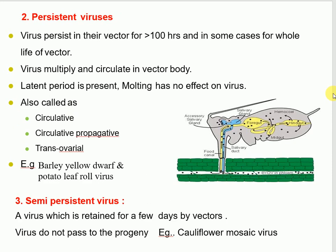Second are persistent viruses. These viruses persist in their vector for more than 100 hours and in some cases for the whole life of the vector. The virus multiplies and circulates in the vector body. A latent period is present. Molting has no effect on these viruses. Persistent viruses are also called circulative, circulative-propagative, or transovarial viruses. Examples: barley yellow dwarf and potato leaf roll virus.